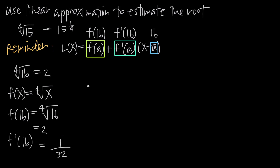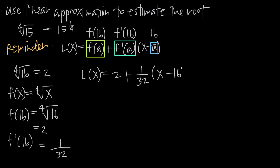Now we can write our linear approximation equation. L(x) is equal to f(a) plus f'(a) times (x minus a). We plug in f(16) = 2 and f'(16) = 1/32, leaving x as a variable and plugging 16 in for a. This gives us L(x) = 2 + (1/32)(x − 16), which approximates f(x) = the fourth root of x near x = 16.